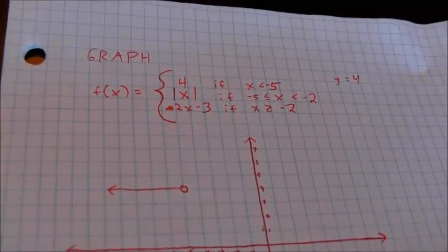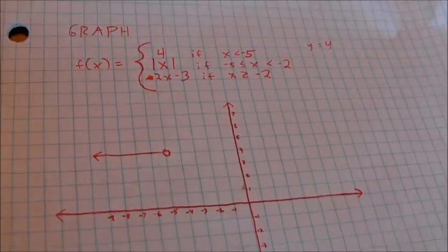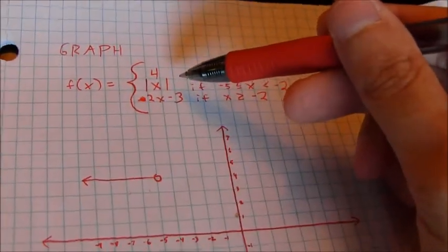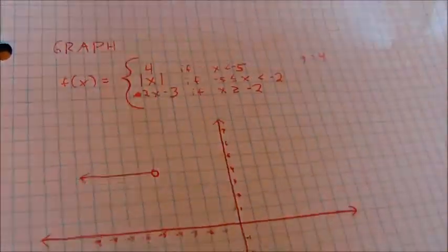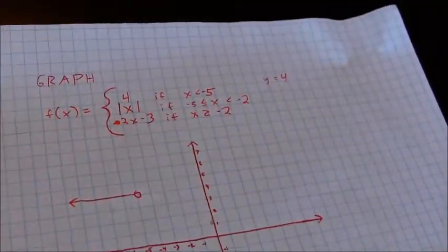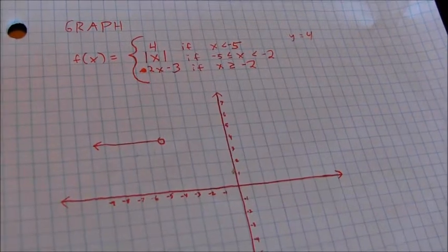Then for the second equation, the function is the absolute value of x. Now you may know that the absolute value of x is a v-shape. I find it easier if I have a nonlinear graph just to plot a couple points, and I think that's a lot easier.